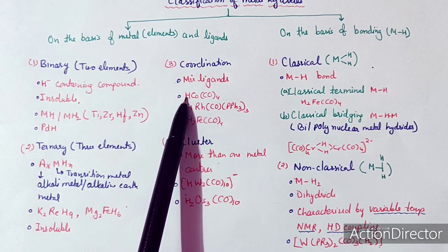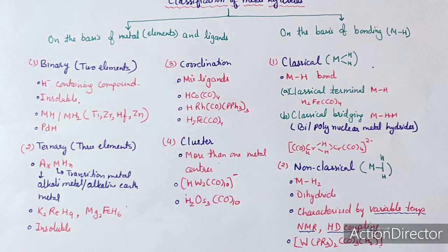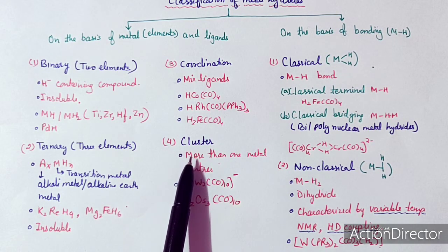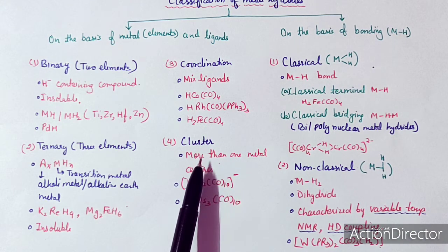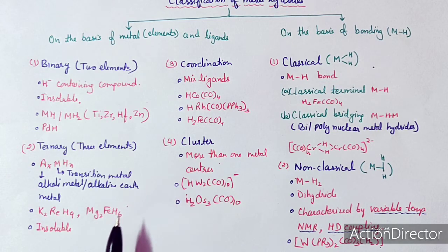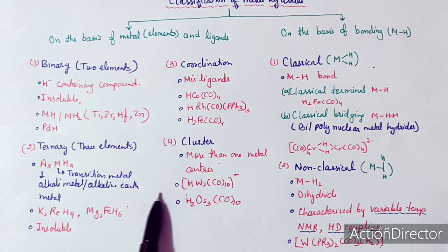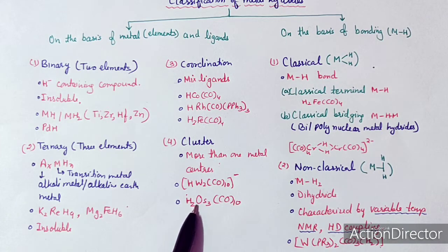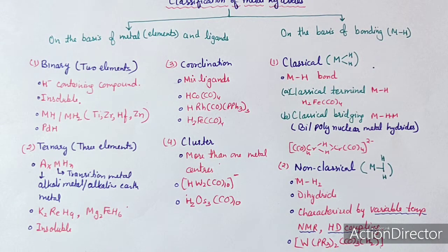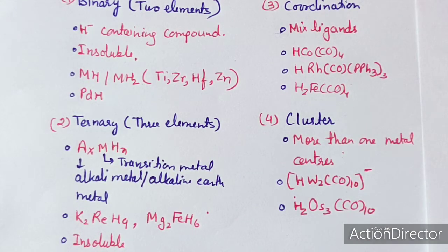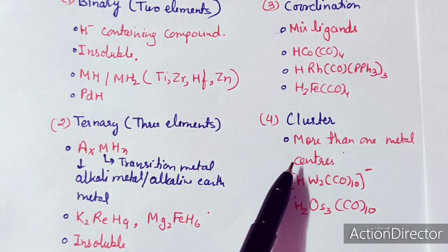The fourth class is cluster metal hydrides, where there are more than one metal centers, and there may be mixed ligands. Examples include a vanadium complex and an osmium complex. To summarize the classification based on metal elements and ligands, there are four types: binary hydrides, ternary hydrides, coordination hydrides, and cluster hydrides.